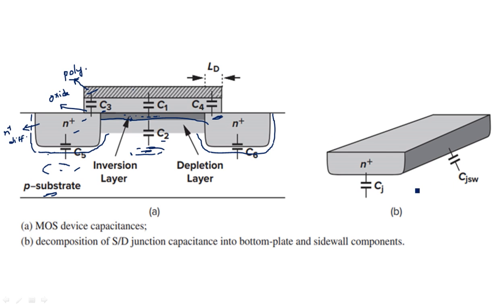All these are the internal capacitors that virtually exist because of the materials inside the MOS structure. Additionally, the source and drain terminals have junction capacitance Cj, which is the bottom plate capacitance, and Cjsw, which is the sidewall component. These are all the different capacitors that exist when considering the MOS structure. The remaining topics will be explained in the next video.